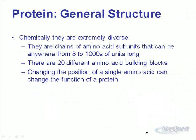In terms of general structure, proteins are extremely diverse. They're all made of amino acids — that's the structural unit of a protein. However, the number of amino acids they're composed of can be anywhere from eight to thousands. There are 20 different types of amino acids that act as building blocks. You can compare this almost to Lego — there are only so many different pieces, but you can build almost an infinite number of shapes using those different pieces in different orders and amounts.